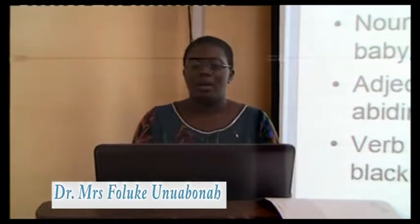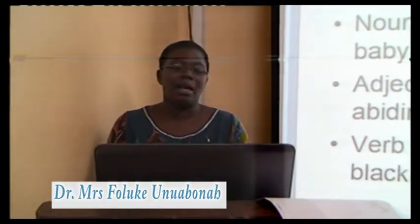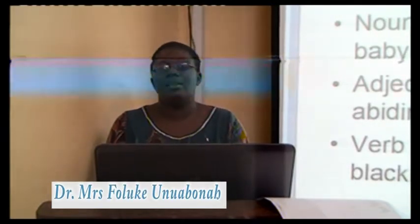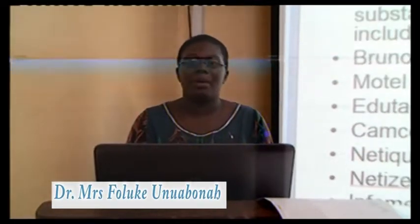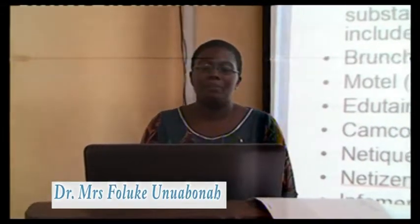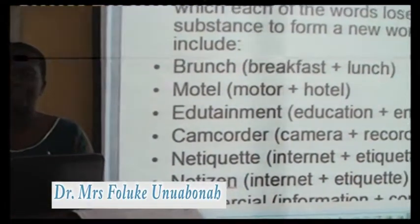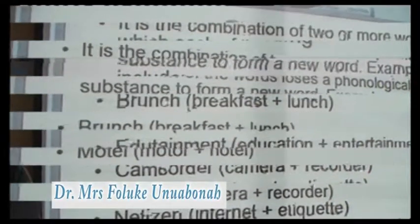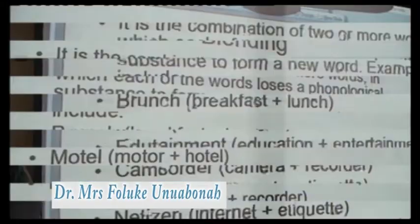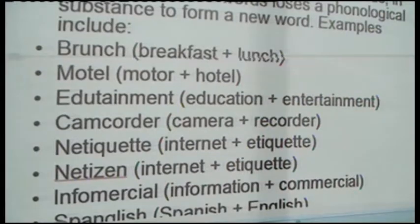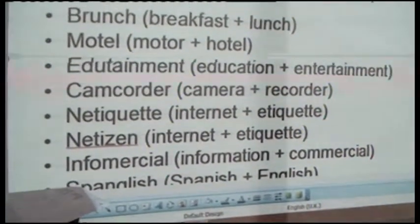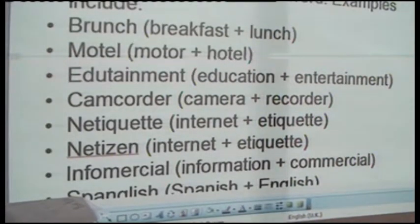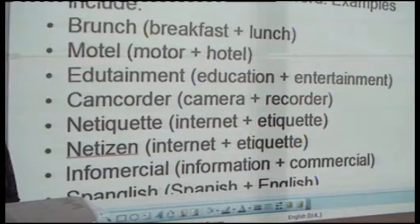You also have verb compounds such as 'hand-pick,' 'finger-spell,' 'dry-clean,' and 'blacklist' — 'black' is an adjective and 'list' is a verb, but together they form a verb. Now we can also talk about blending, which is a combination of two or more words where each word loses part of its phonological form. For example, 'brunch,' 'edutainment' — a combination of 'education' and 'entertainment,' 'camcorder' — a combination of 'camera' and 'recorder,' 'netiquette' and 'netizen' — a combination of 'internet' and 'etiquette.'